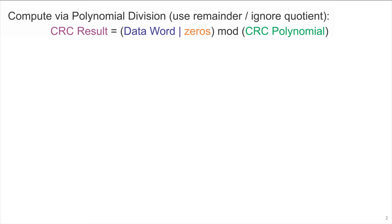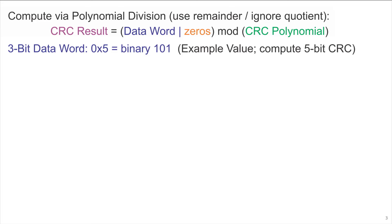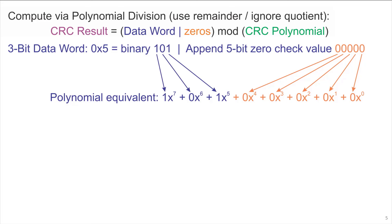We'll use an example of a 3-bit data word, hexadecimal 5, binary 101. We'll compute a 5-bit CRC based on that 3-bit data word. To do this, we append a 5-bit zero check value as a starting value to then compute the real check value at the end. The polynomial equivalent of this code word is x to the 7th plus x to the 5th for the data word portion, and zero coefficients on the x to the 4th through x to the 0th terms for the initial check value.